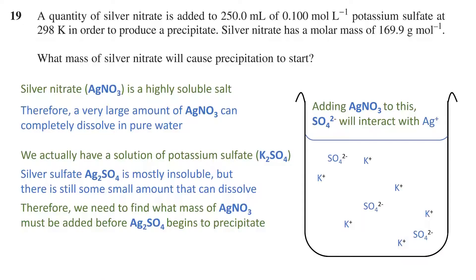Silver sulfate is a mostly insoluble salt but there is still some small amount that can dissolve. Therefore the whole point of this question is to find out what amount of silver nitrate or really how small an amount of silver nitrate must be added before the silver sulfate begins to precipitate. It is the Ksp value which tells us what concentration of silver ions we need in order to get that precipitation started given the sulfate concentration.